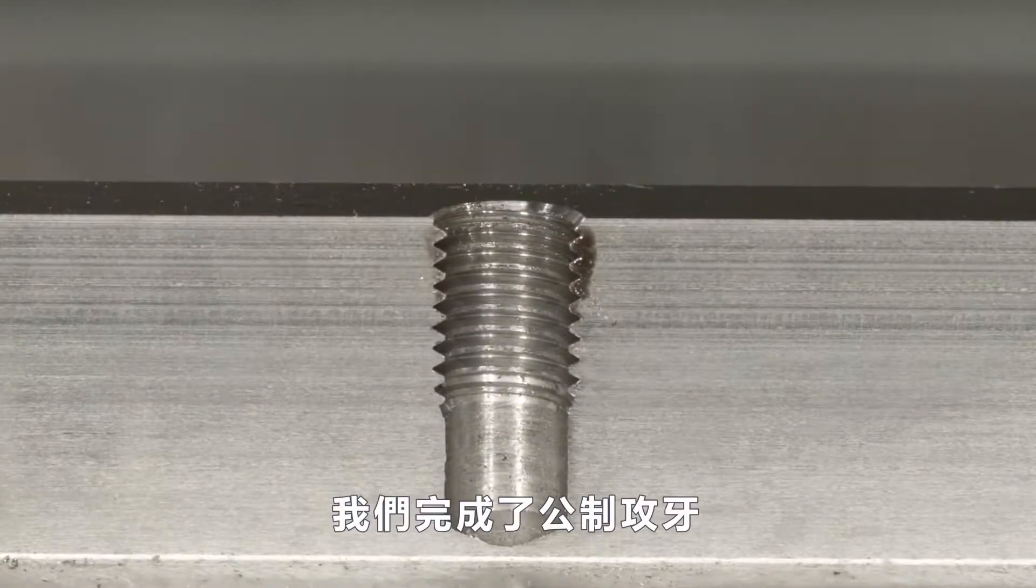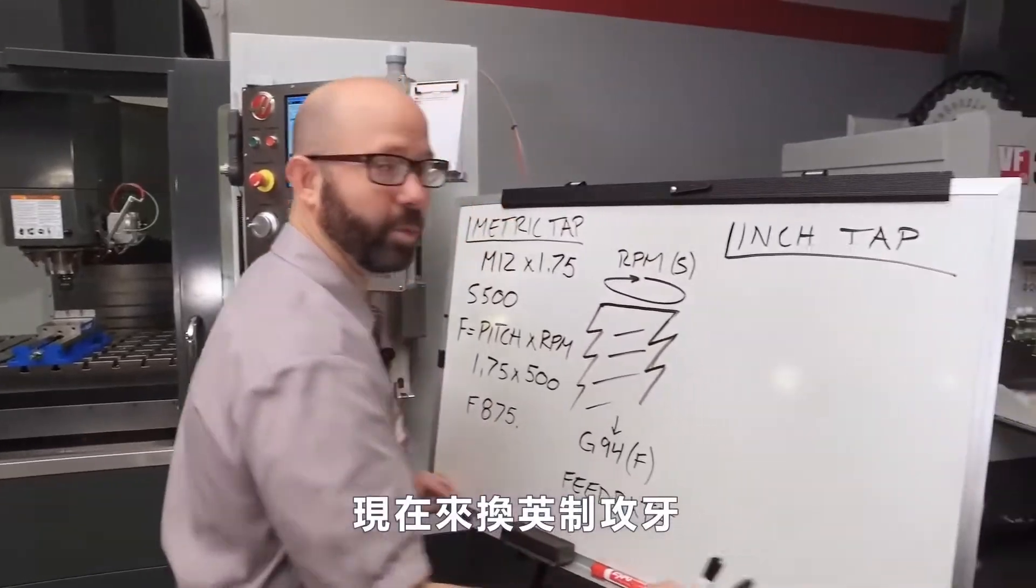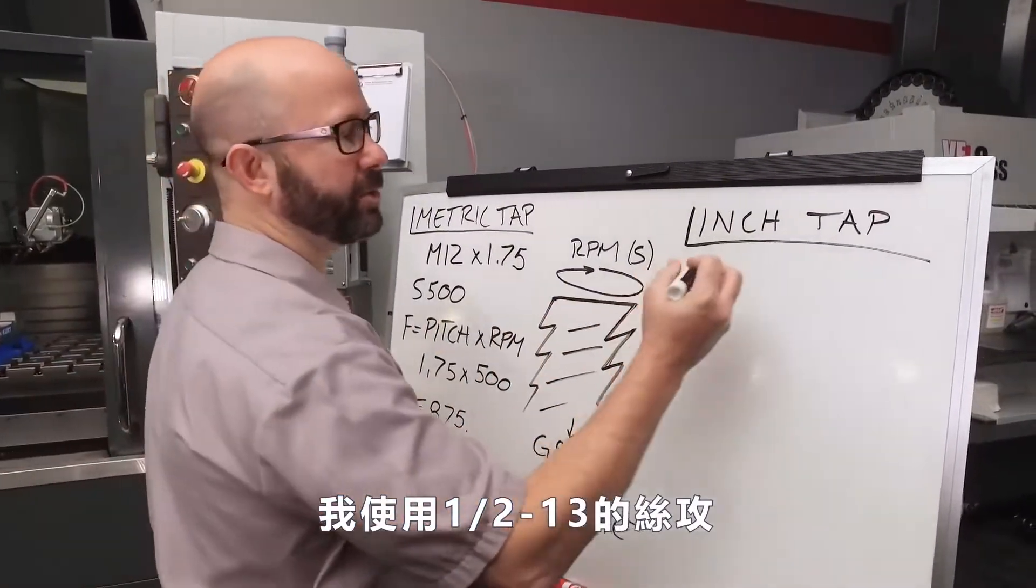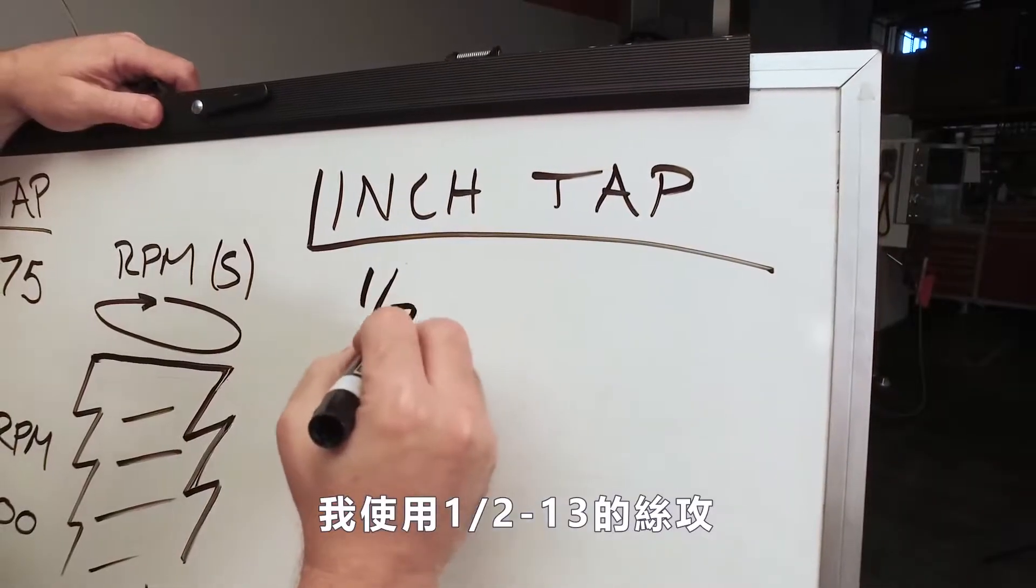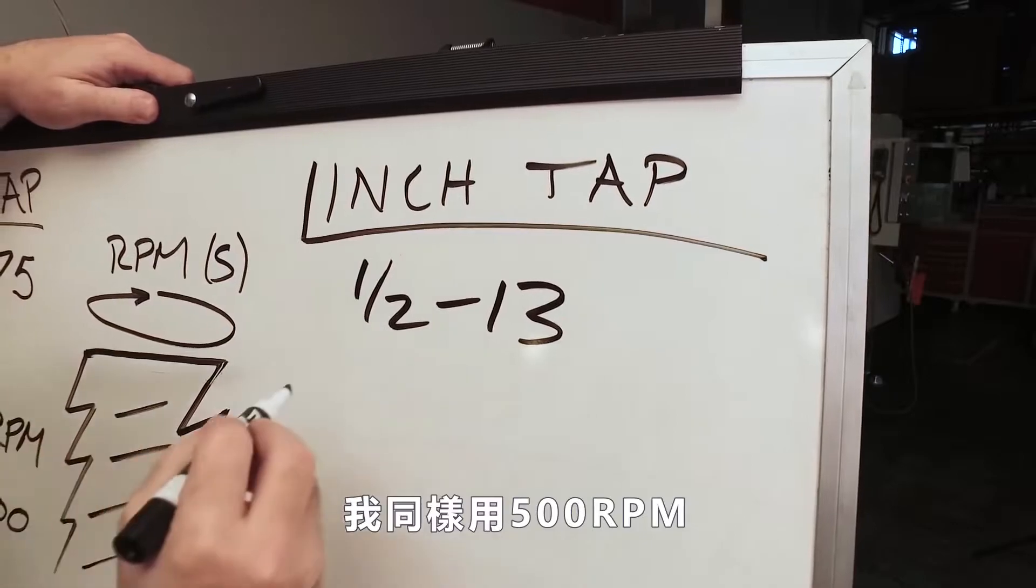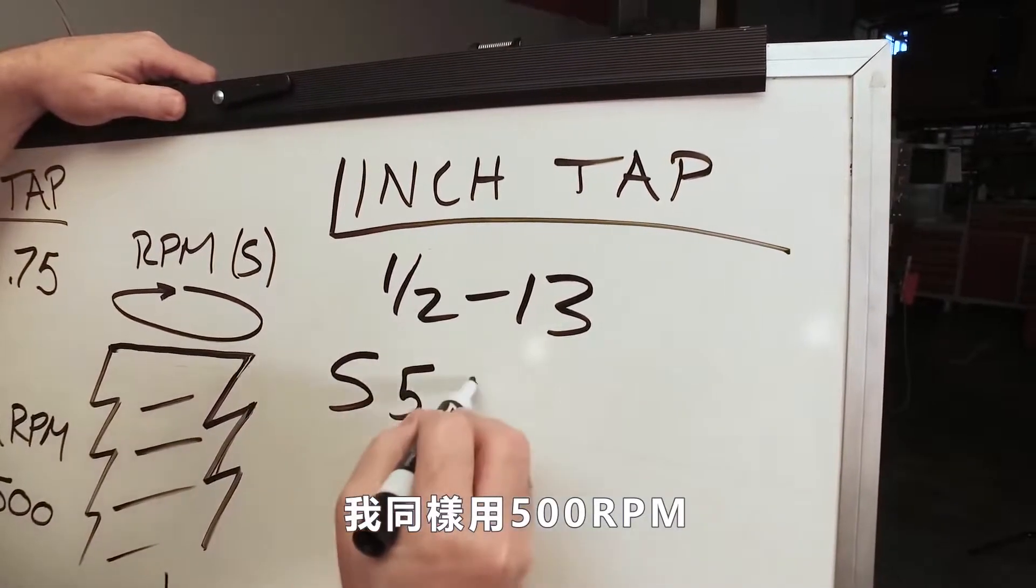Well, we've done it. We've programmed our metric tap. Now we're going to program our inch tap. For this example, we're going to use a 1/2-13. Now, for this tap, we're going to use that same 500 RPM value.